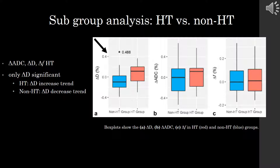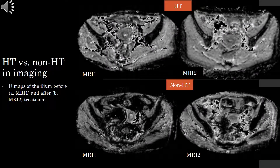For subgroup analysis, the figure shows box plots of delta D on the left, delta ADC in the middle, and delta F on the right, where blue boxes were non-HT patients and pink boxes were HT patients. We noted that only delta D was significantly different between both groups. We also found that in HT patients, delta D had an increasing trend, while in non-HT patients, delta D had a decreasing trend. This significant difference in delta D can be qualitatively observed in imaging: the top row is from an HT patient and the bottom row is from a non-HT patient, with the left column from baseline MRI and the right from post-treatment MRI. Note that in the HT patient, there is a marked increase in signal intensity in the ilium, a feature not reflected in the non-HT patient.